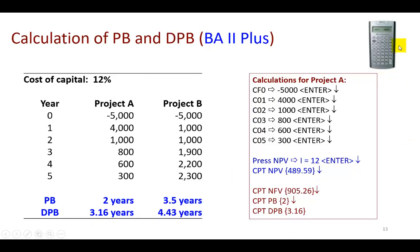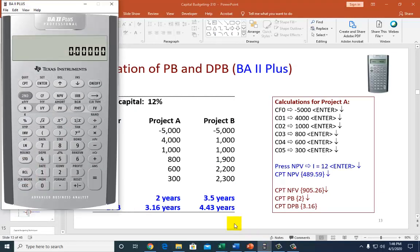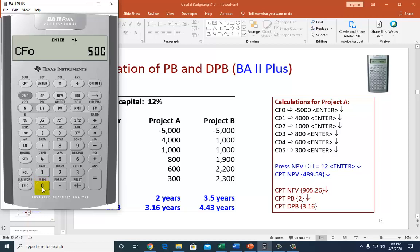We can also use the BA2 Plus Professional to calculate payback and discounted payback — the basic student version doesn't have that feature. Here's the process for Project A. First, clear the screen, then hit Second, Clear Work, and Clear TVM. Open the cash flow register and hit Second, Clear Work again. It prompts for the initial cash flow: enter 5,000 as a negative value using the plus/minus key, then hit Enter.